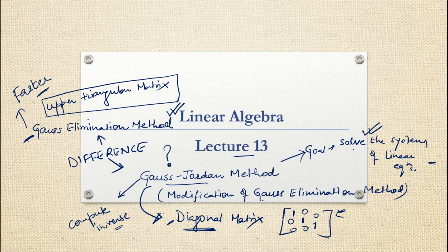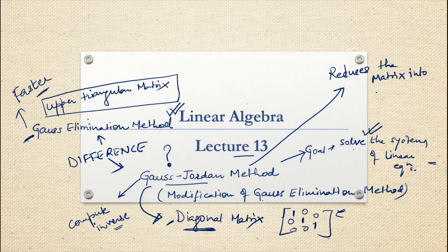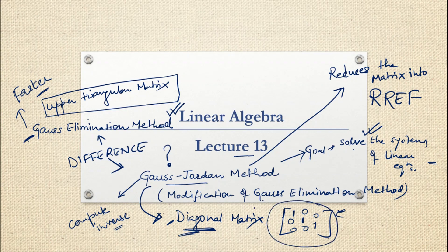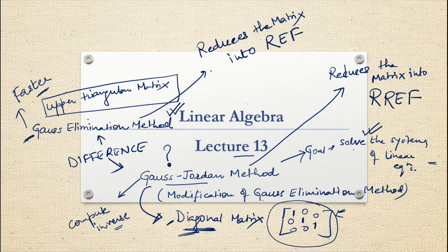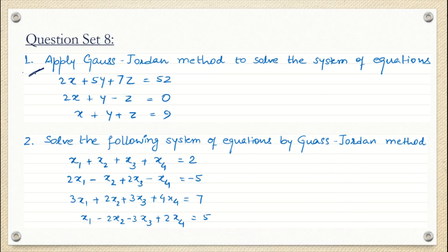Gauss-Jordan method reduces the matrix into RREF form. The diagonal matrix can become your identity matrix, while Gauss elimination reduces the matrix into REF form. Since we already understood the concept of Gauss elimination, today's class will be much easier — we just need to add a few more steps in Gauss-Jordan method.